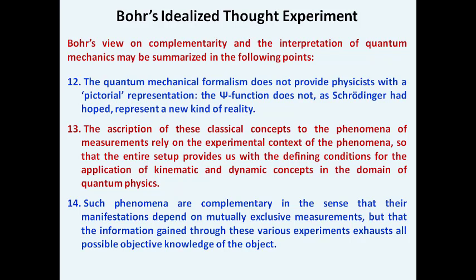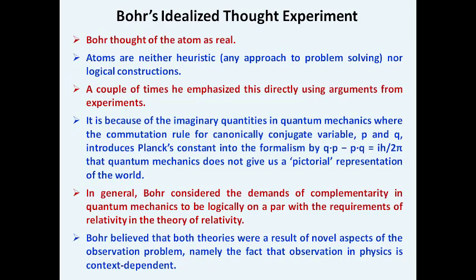Only by noting down all various possible objective knowledge of the object can we begin to explain experimental phenomena defined by classical or quantum mechanics. These are the 14 points derived by Bohr regarding the concept of Heisenberg's uncertainty principle and the interpretation of quantum mechanics.